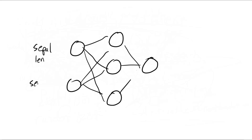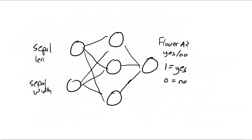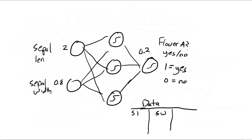If we draw back out our neural network, you can see that we put an activation function in every layer except for the input layer. Just to simplify our example, we'll use just the sepal length and sepal width, and our output will be whether or not it's flower type A — one for yes, zero for no, or somewhere in between if the network isn't certain.